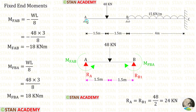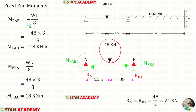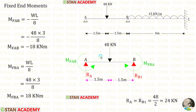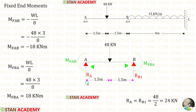The length of span AB is 3 meters and the length of span BC is 4 meters. Now let us find the fixed end moments and reactions. In span AB we have a central point load of 48 kN. The formulas to find the fixed end moments are −WL/8 and +WL/8, where W is 48 and L is 3. After calculation we get M_AB and M_BA.